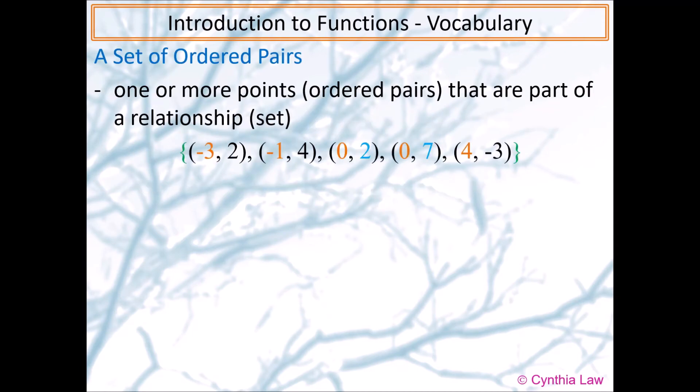Next, let's describe a set of ordered pairs. We have one or more points. The points are called ordered pairs because they are written in a specific order. X-coordinate first, Y-coordinate second. So there's an order to it. And these points, they are part of a relationship. So instead of saying relationship all the time, we say it's a set. So whenever you see the word set, you know there's a relationship of some kind.